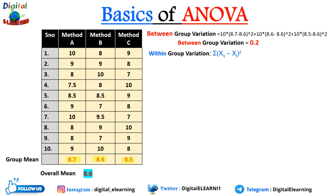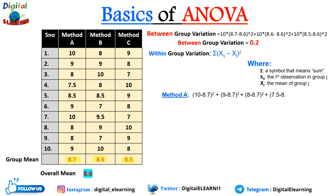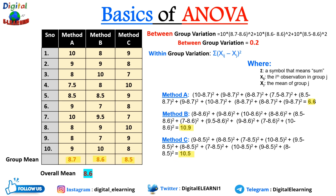We calculate the between-group variation as: 10×(8.7−8.6)² + 10×(8.6−8.6)² + 10×(8.5−8.6)² = 0.2. For within-group variation, we compute the summation of (x_ij − x̄_j)² for each group. For method A, B, and C the within-group variations are 6.6, 10.9, and 10.5 respectively, summing to 28. So between-group variation is 0.2 and within-group variation is 28.